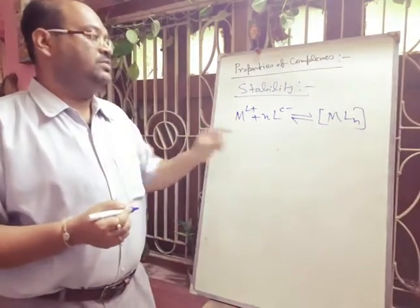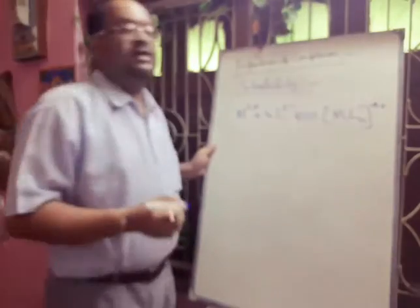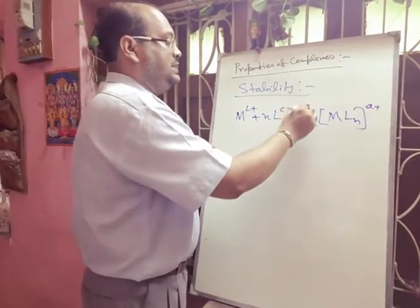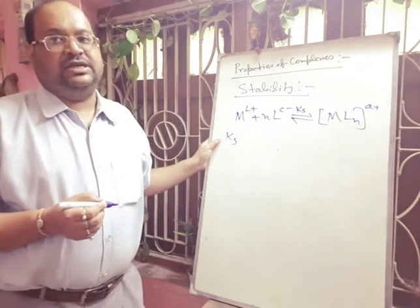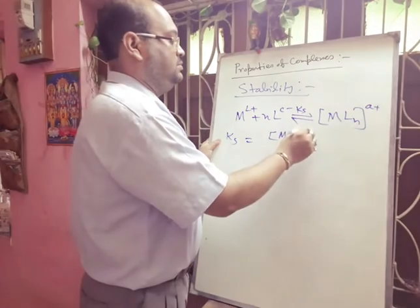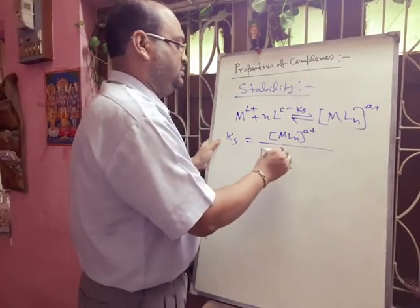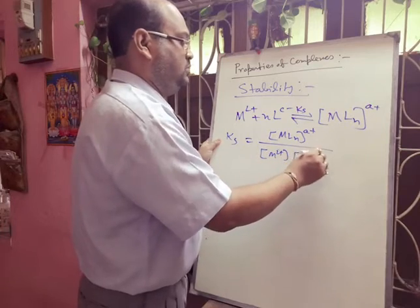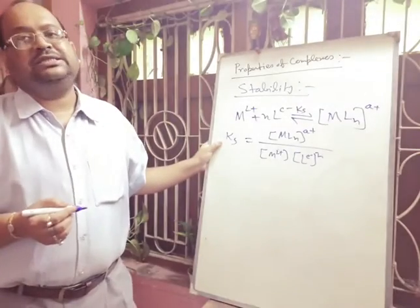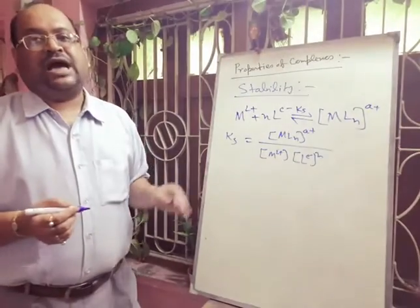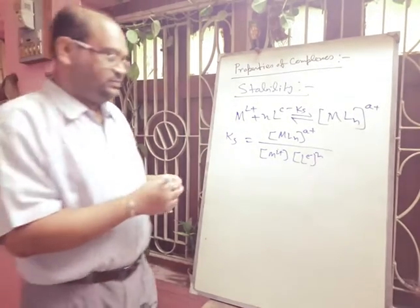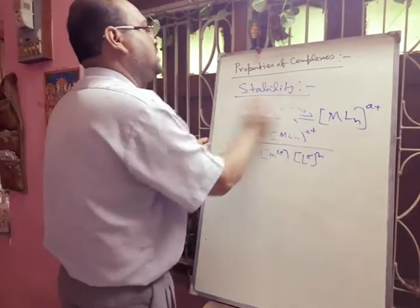Consider a complex formation where a metal M with charge l+ reacts with n ligands of charge c− to form the complex [MLn]. Applying the law of chemical equilibrium, the stability constant Ks equals the concentration of the product divided by the concentration of the reactants raised to their respective powers. Greater the value of Ks, higher will be the thermodynamic stability of the complex.